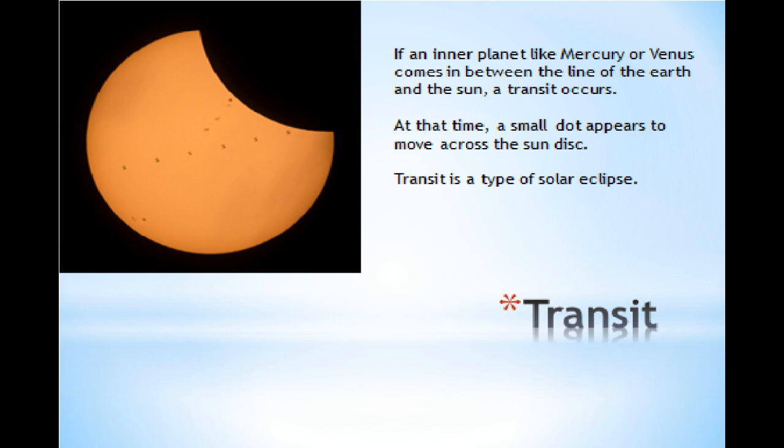Now, students, if an inner planet like Mercury or Venus comes in between the line of the earth and the sun, a transit occurs. At this time, a small dot appears to move across the sun disk. And transit is a type of a solar eclipse.